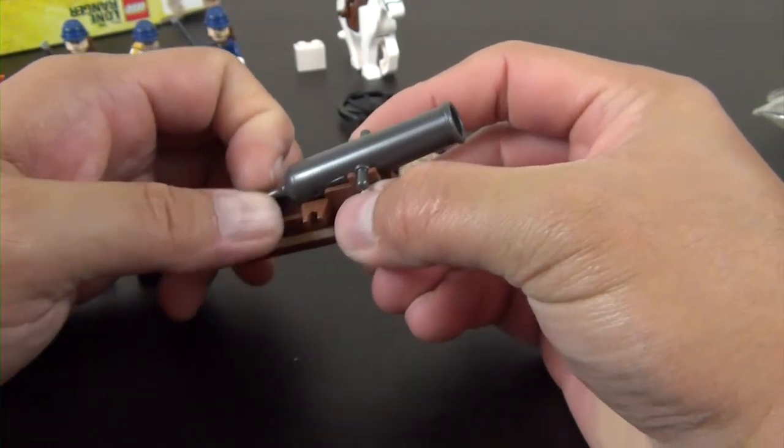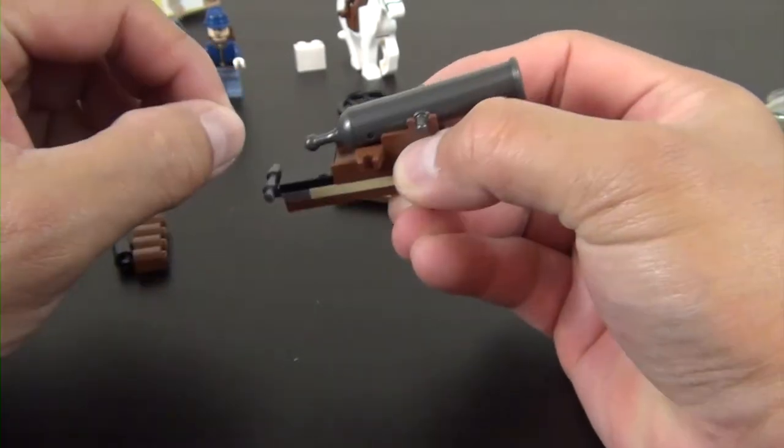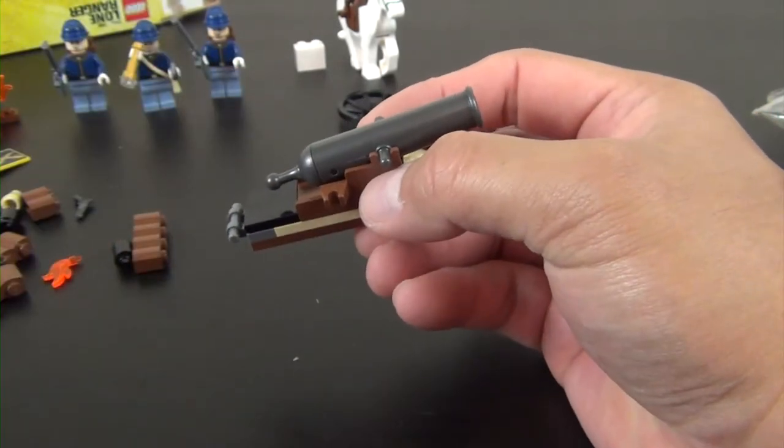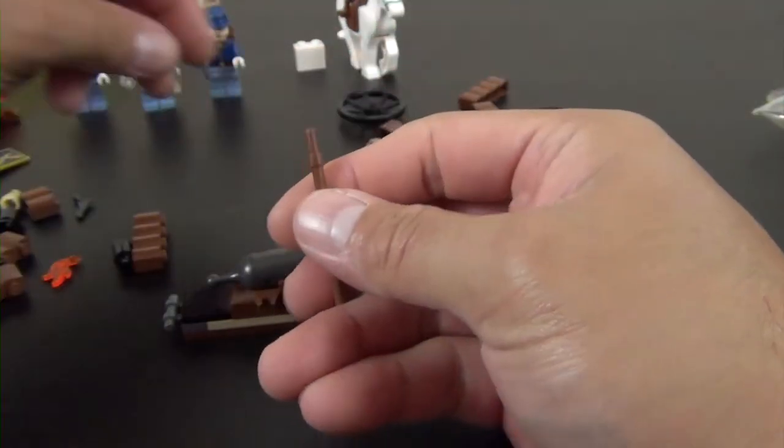It's a spring loaded cannon. It has this little piece you pull back, and when you release it, it flicks out the little brick that we're going to put in there.